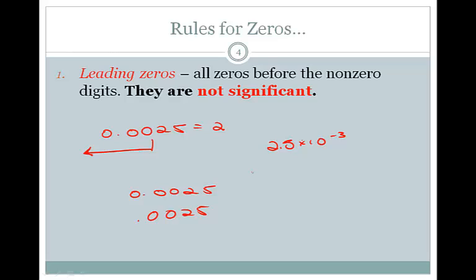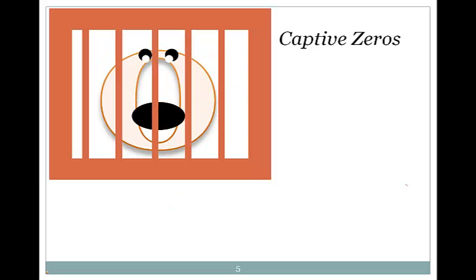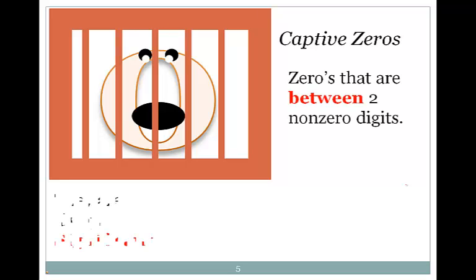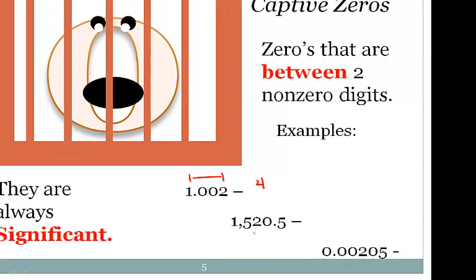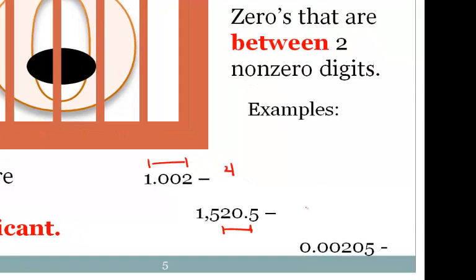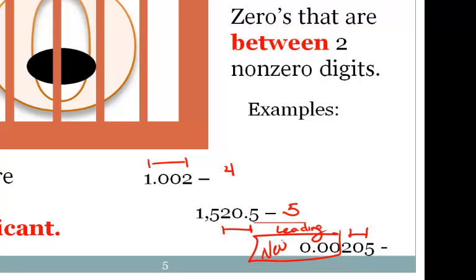Leading zeros are never significant. Our second type of zero is a captive zero — zeros that are between two non-zero numbers. They are always significant. So here we see 1 and 2, both significant figures, and those two zeros fall between them, so there are four significant figures. Here, this zero falls between the 2 and the 5, so it is also significant — that number has five significant figures. In 0.00205, those leading zeros are never significant, so 0.00205 has three significant figures.